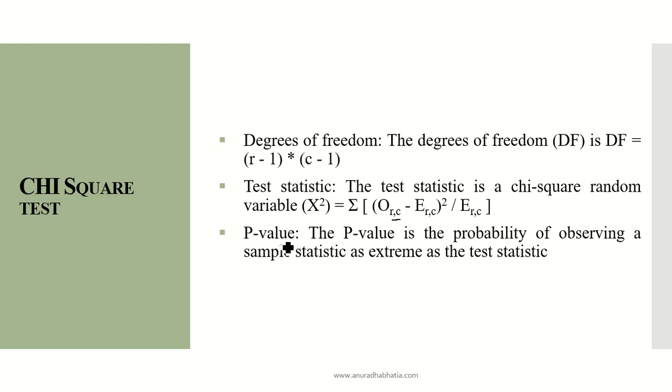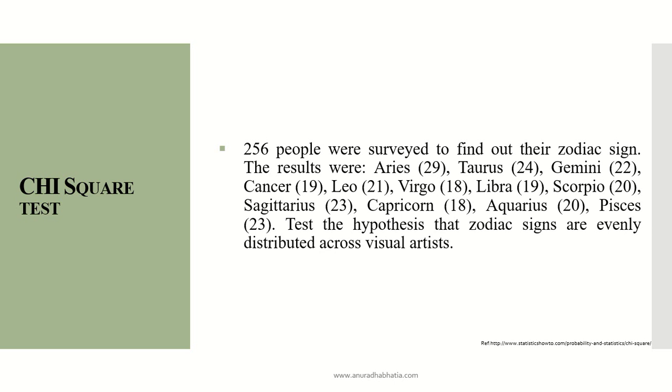This is an example taken from the web which says that 256 visual artists were surveyed to find out about their zodiac signs. The hypothesis is that the zodiac signs are equally distributed across the visual artists. This is the null hypothesis.